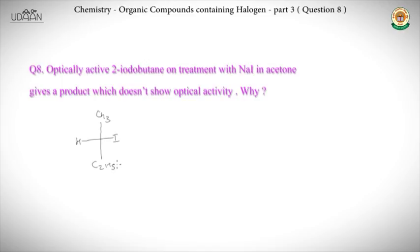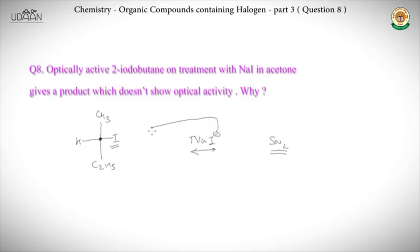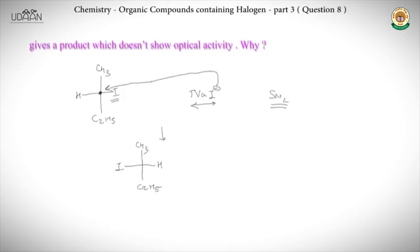Drawing the Fischer projection of optically active 2-iodobutane: NaI provides I⁻, which is a strong nucleophile. This performs an SN2 reaction — a single-step reaction producing only one product. Since it is SN2, the attack occurs at the chiral carbon bearing iodine, and the product is formed with inversion of configuration — SN2 always gives inversion unless there is a neighboring group participation effect.